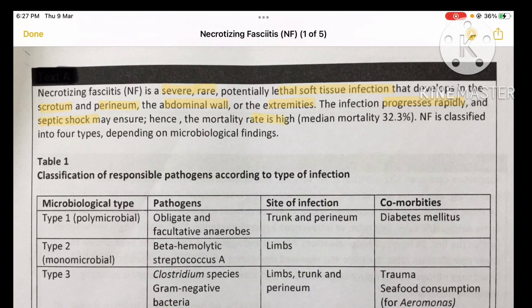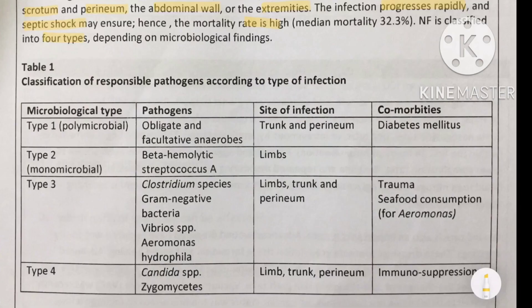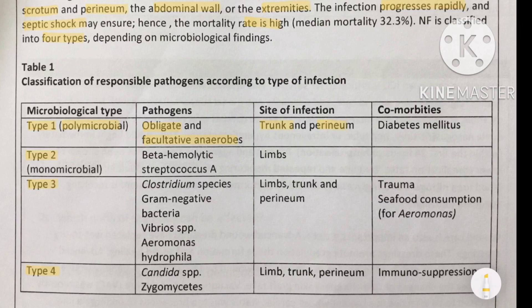Necrotizing fasciitis is divided into four types depending on the causative microorganisms. Type 1 is polymicrobial — caused by many microorganisms including obligate and facultative anaerobes. Type 1 necrotizing fasciitis is typically seen in the trunk and perineum, and is more common in diabetic patients.